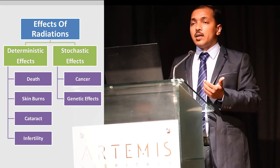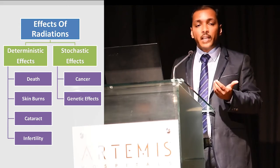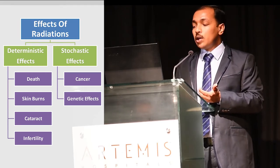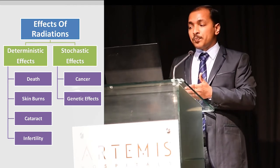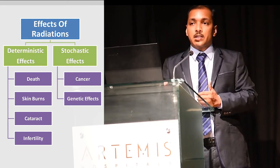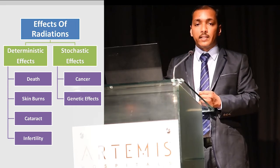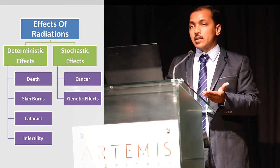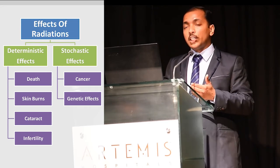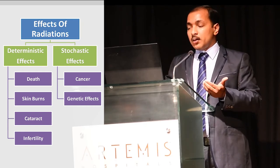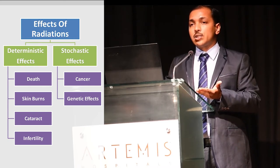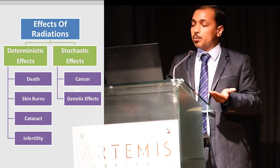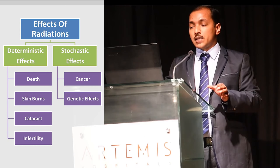Skin burns occur if one part of your body is exposed for a long period; cataract can develop if your eyes are exposed; and infertility can develop if reproductive organs are exposed. Stochastic effects have no threshold — they are probabilistic, meaning they may or may not happen. Cancer is an example: radiation-induced cancer can develop if normal cells are exposed. Genetic effects are also stochastic — DNA damage causing mutations can appear not in the exposed person but in the second, third, or fourth generation.